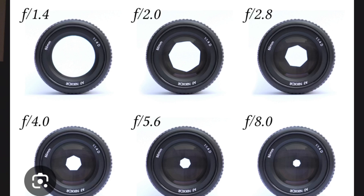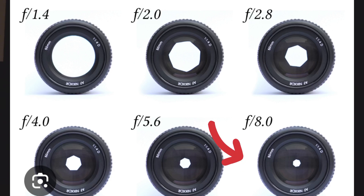Up here I'm showing you a picture of what the lens looks like with different aperture settings. For example, an f-stop of f/1.4 has a much wider lens opening letting in a lot more light than f/8.0, which has a much smaller opening letting in far less light.